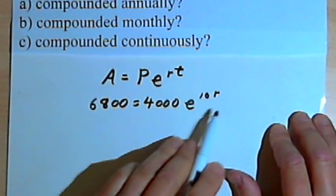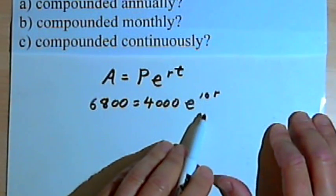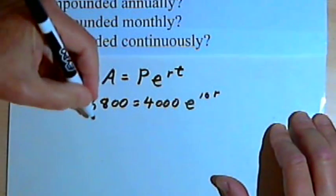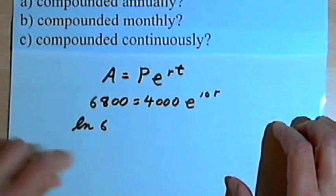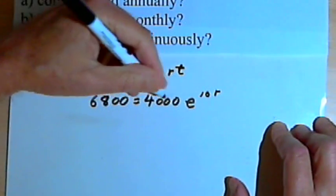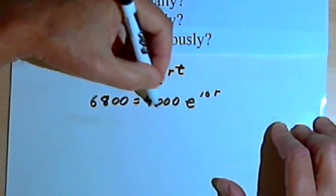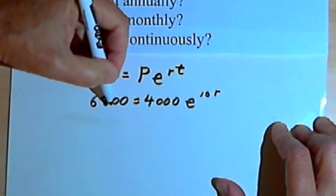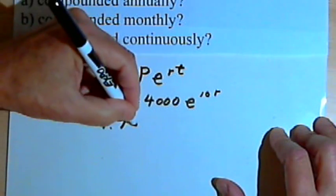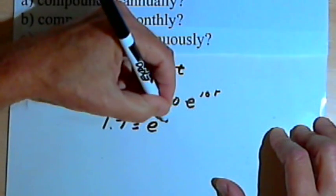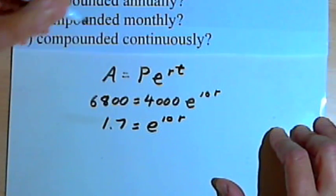I want to solve for r, so I'm going to take the natural log of both sides of this equation. That means I'll have ln, oh, I'm sorry. I should have first divided both sides by 4000. That would have been easier. When I divide by 4000, that's the same thing I've done twice already. I get 1.7 equals e to the 10r.